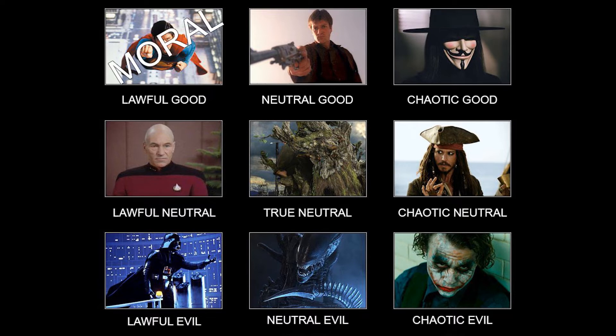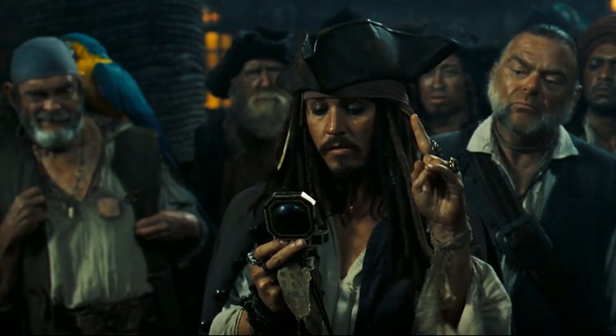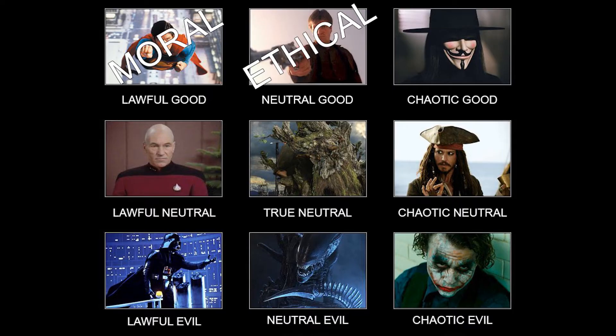Number two: ethical. Like moral individuals, they see the world as black and white, but they have their own moral compass. They would be neutral good. Number three: egocentric. Think of this person as someone whose moral compass is like that of the compass owned by Captain Jack Sparrow — it points a person towards the thing they want most. The egocentric person will do good if it benefits them. This individual would be chaotic neutral.